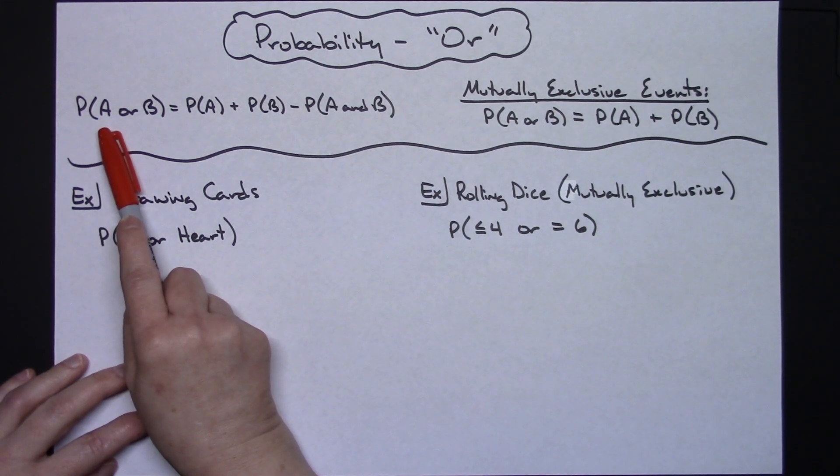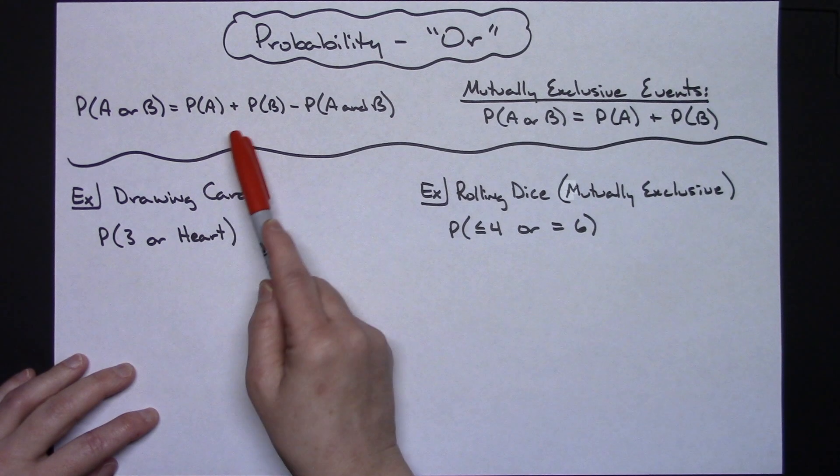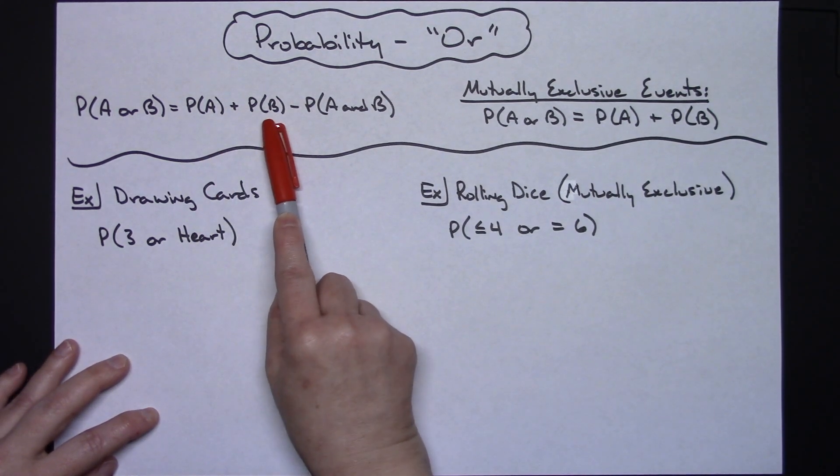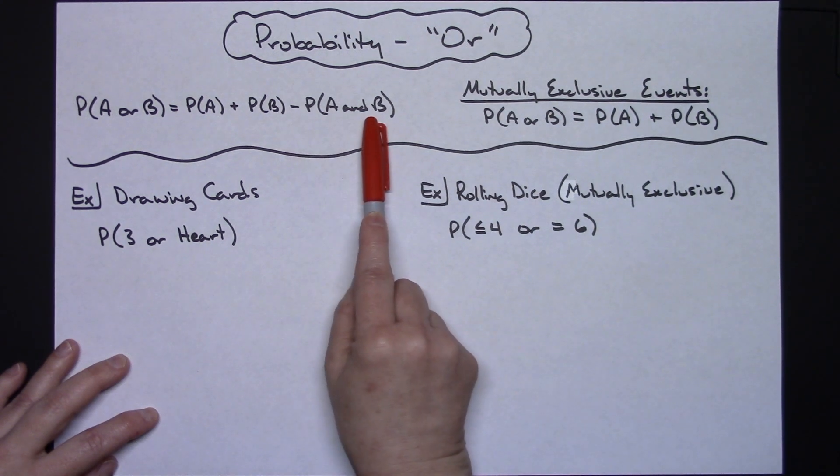The probability of an event A or B occurring can be calculated by taking the probability of A plus the probability of B minus the probability of A and B.